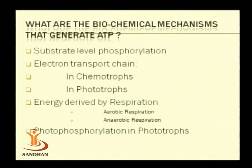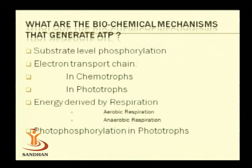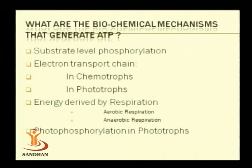Let us now focus on the various biochemical mechanisms for generation of ATP in bacteria. These can be divided into substrate-level phosphorylation, use of the electron transport chain — including aerobic respiration and anaerobic respiration — which is an important energy-generation mechanism in chemotrophs, and finally, in the case of phototrophs, energy is principally generated by a process known as photophosphorylation.